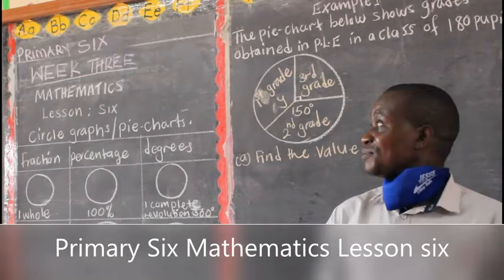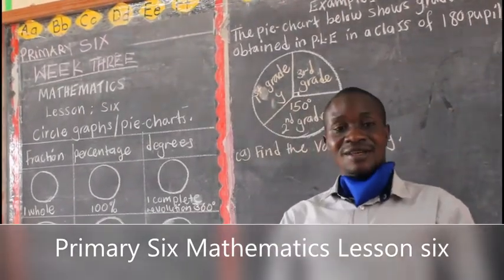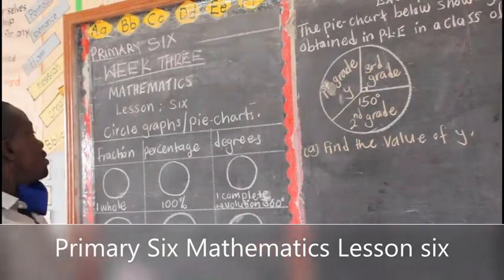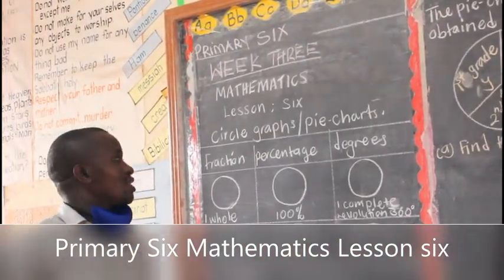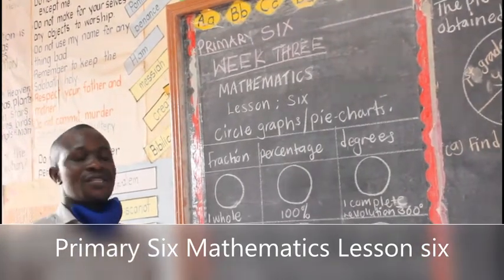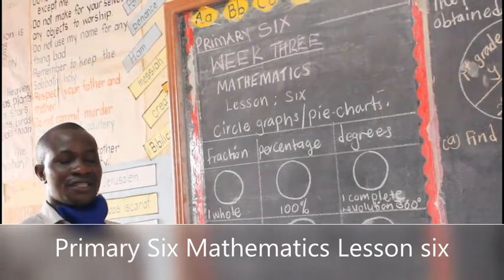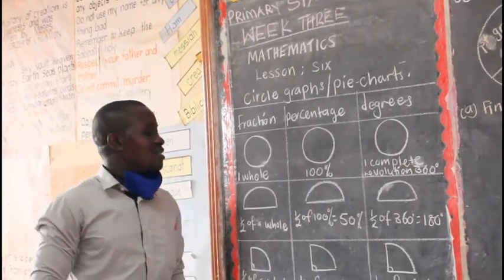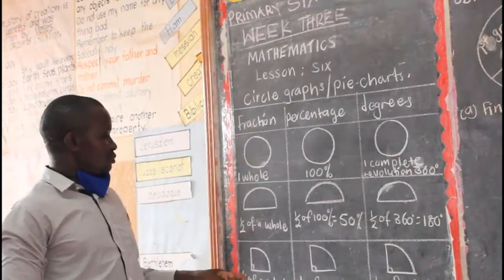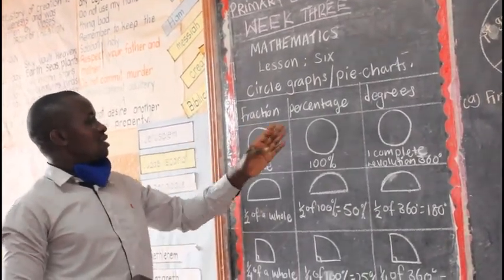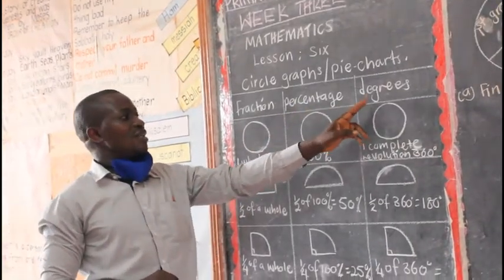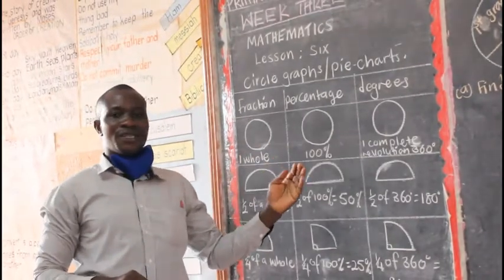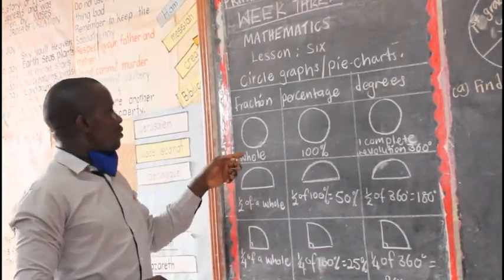Welcome to this lesson, Prima 6 members. We are still looking at data handling as a topic. In lesson 6, we are going to look at circle graphs, also known as pie charts — they are the same thing. Here is a diagram showing the circle graph. In the first column we have fraction, in the second we have percentage, and in the third we have degrees. We can express circle graphs in terms of fractions, percentages, and degrees.